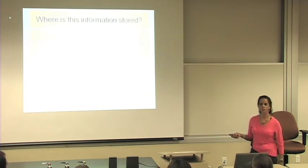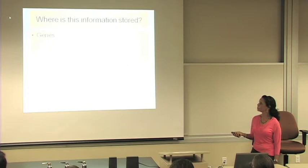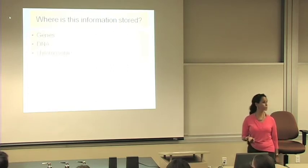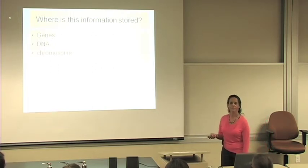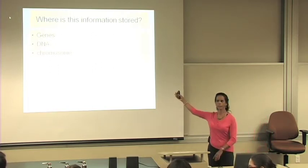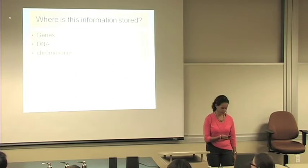And so this information that determines characteristics, where is it stored? DNA. DNA. Very good. Where else? Any other words? Genes. DNA. Chromosomes. Heard this word? You've heard those words before. How are these three words related? How are these three concepts related?